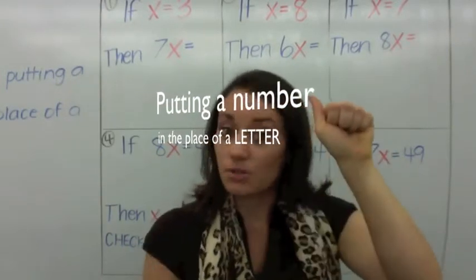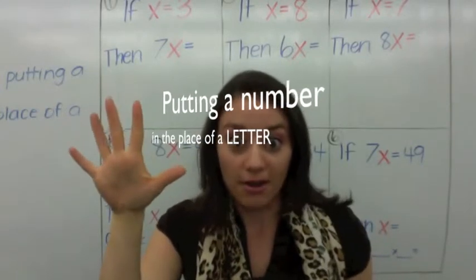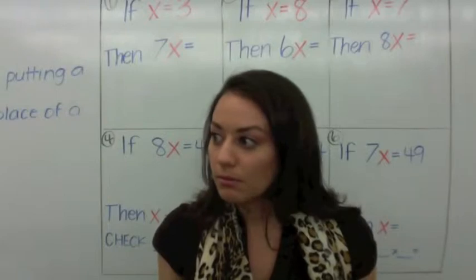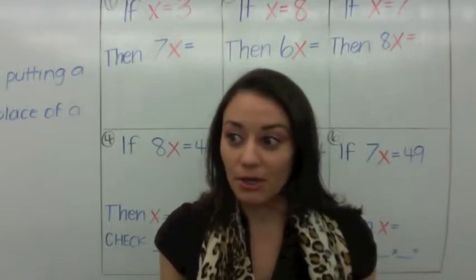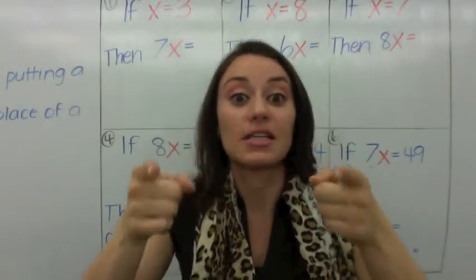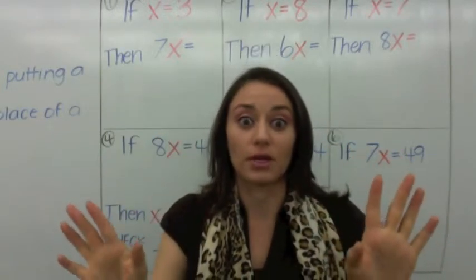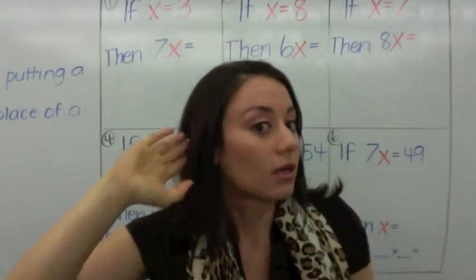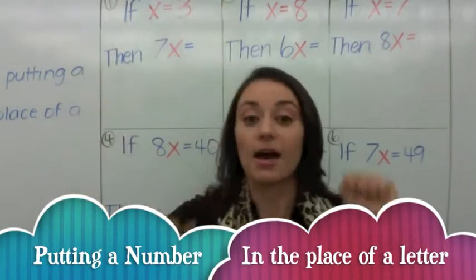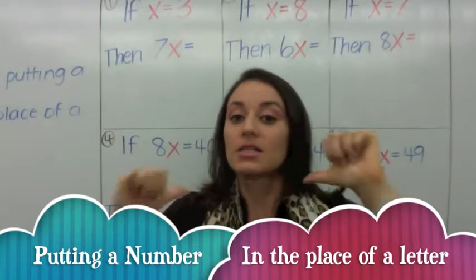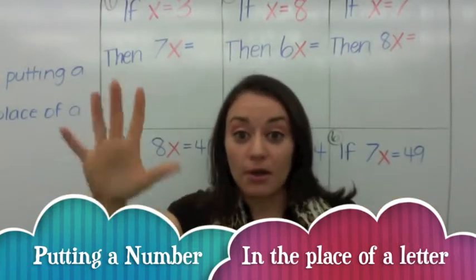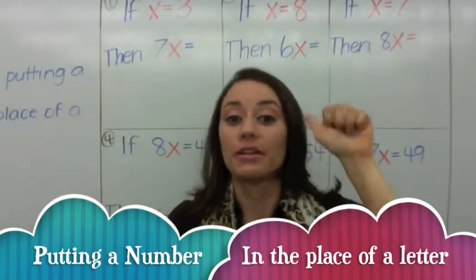Because this is the letter A in sign language, and this is a number — this is the number five. So we're going to do that one more time. I'm going to say SUBSTITUTION and then you're going to say SUBSTITUTION. SUBSTITUTION — putting a number in the place of a letter. One more time: SUBSTITUTION — putting a number in the place of a letter. Very good.